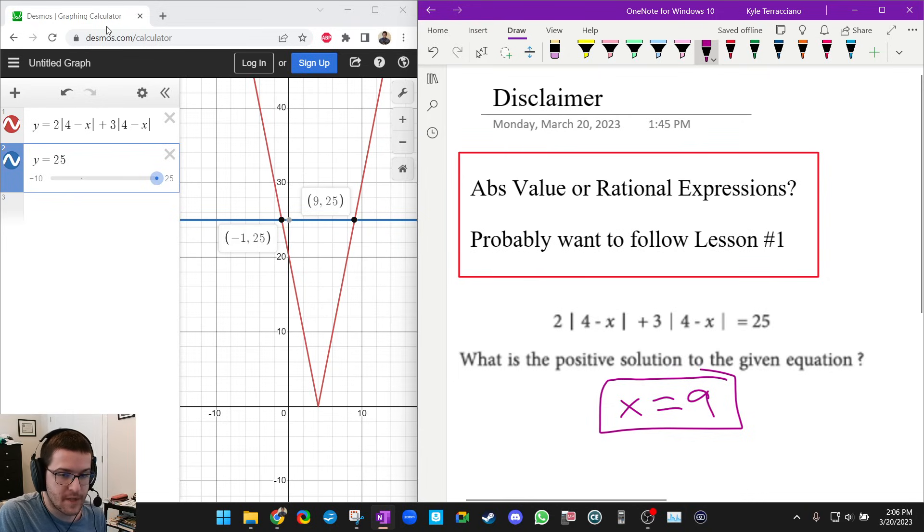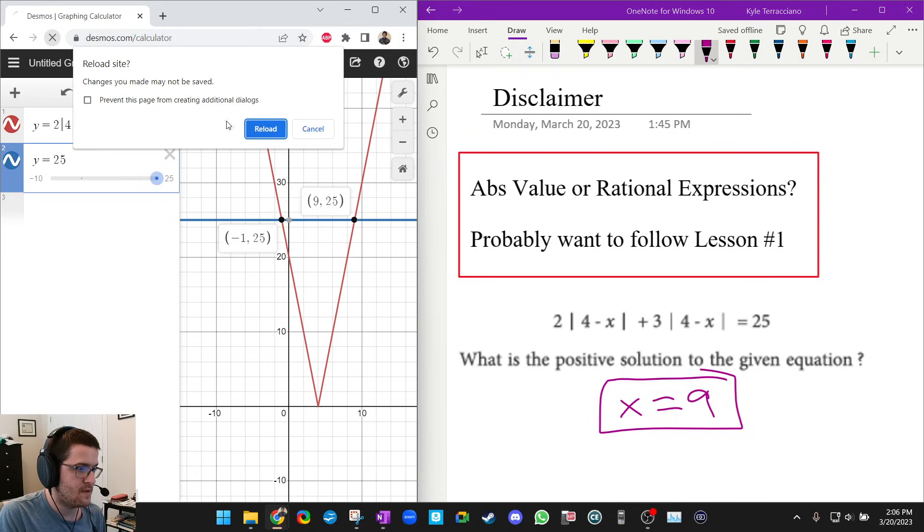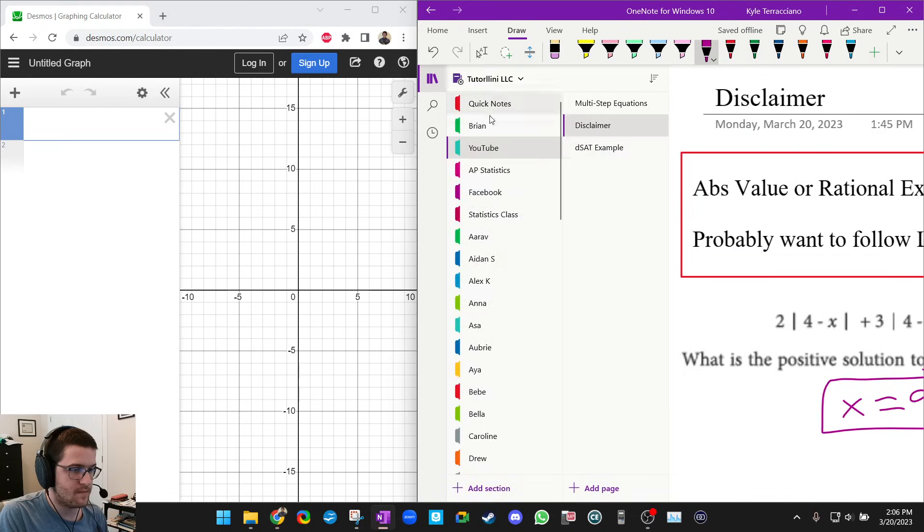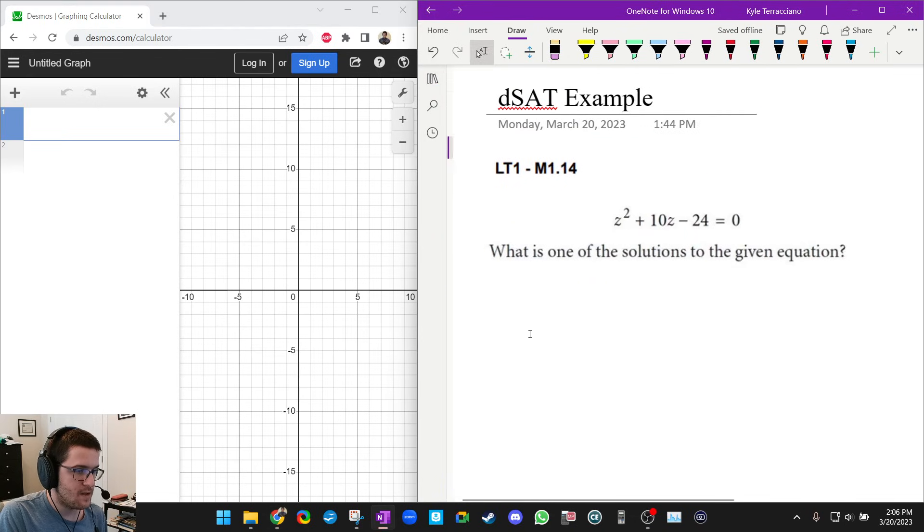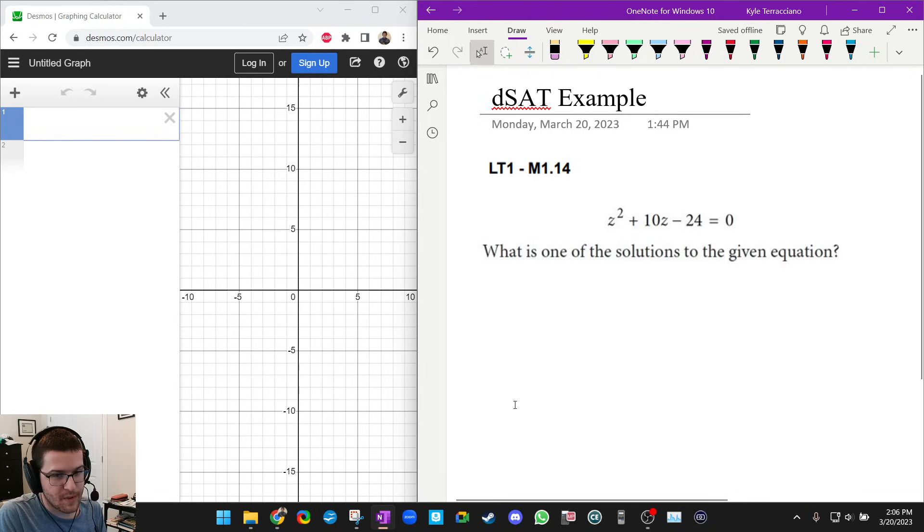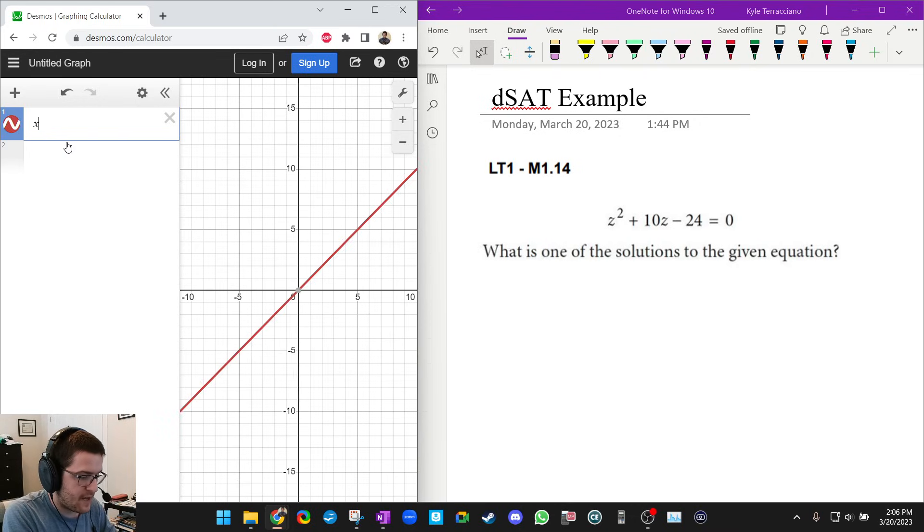So let's do one more from the digital SAT, and we'll practice it doing it the fast way. So pause this video, see if you can do it now that you know what to do. So in order for this to work, I can't use z. So I'm going to kind of just mentally replace all the z's with x's. So x² + 10x - 24 = 0.